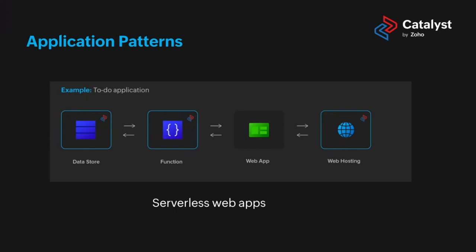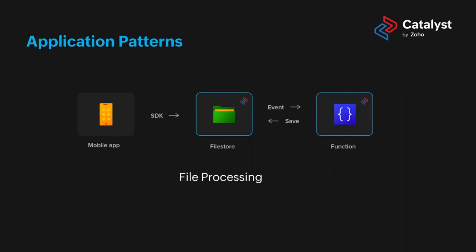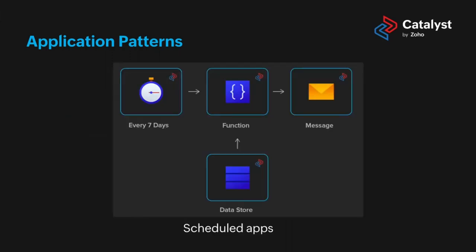For example, a serverless web app for a to-do application — you have a list of tasks, store them, fetch them again, and allow users to cross out completed tasks. This can be done using backend services, function services, and web client hosting. If you want to do file processing operations — for instance, a mobile app that sends requests with images, you process them, create thumbnails, and send them back — that's another use case for serverless. You can also use it for scheduled apps where an operation needs to happen regularly at a scheduled time.